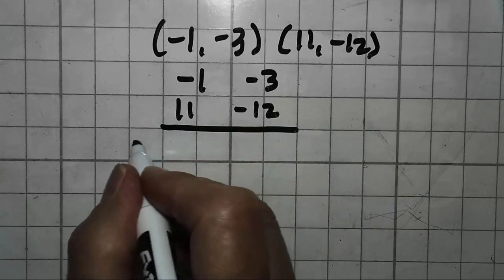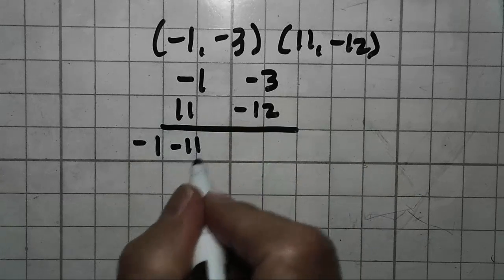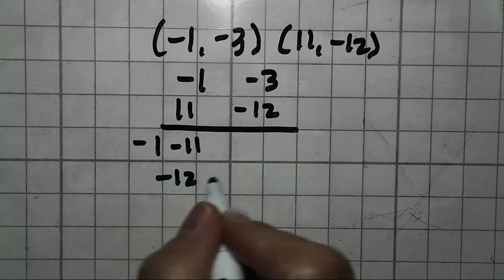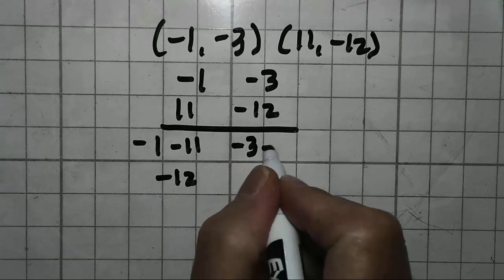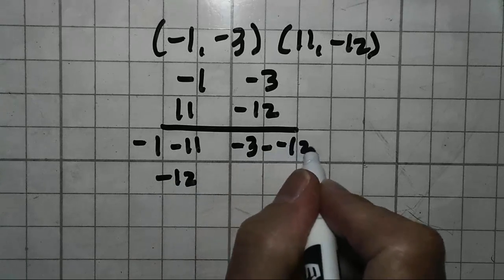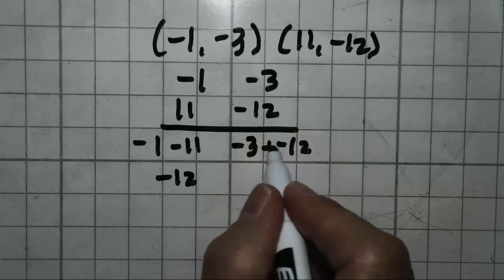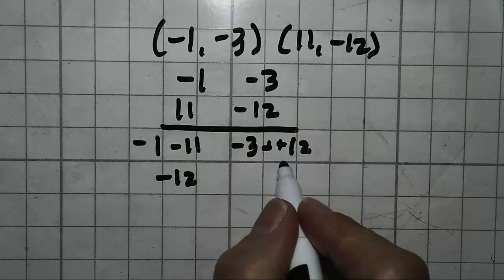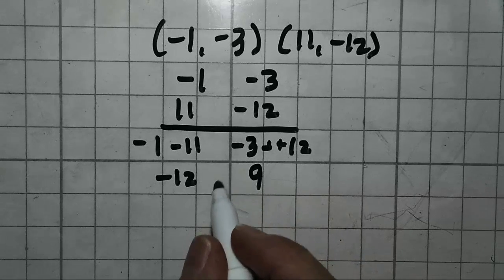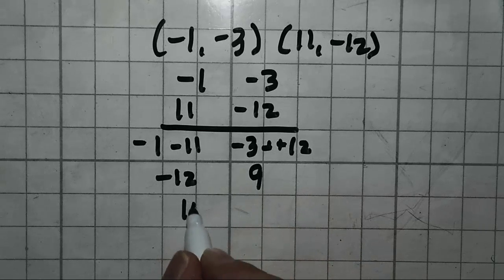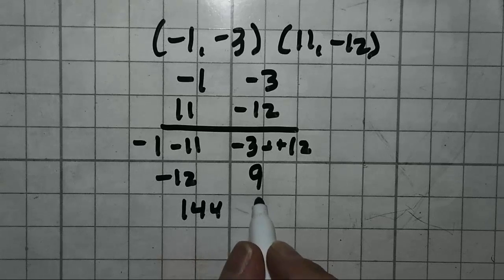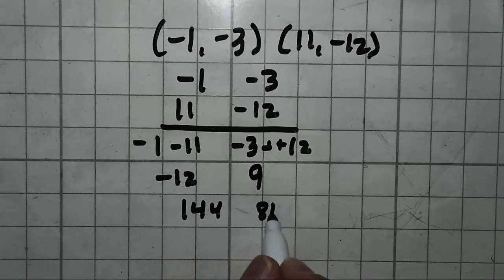Top number minus bottom number. Negative 1 minus 11 is negative 12. Negative 3 minus negative 12. Top number minus bottom number becomes negative 3 plus 12, which is 9. Negative 12 squared, 144. 9 squared, 81.